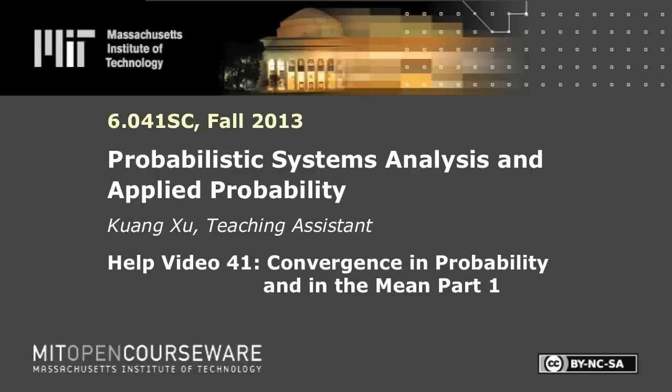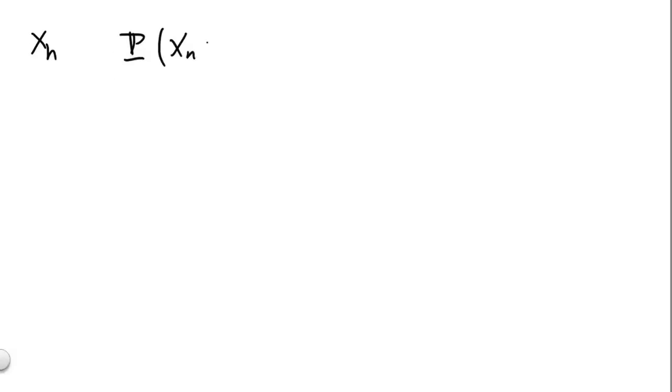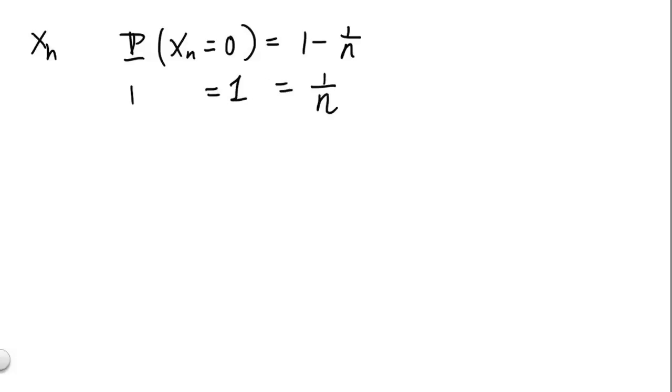In this exercise, we'll be working with the notion of convergence in probability, as well as some other notions of convergence of random variables that we'll introduce later. The first type of random variable is xn, where xn has probability 1 minus 1 over n to be at 0, and probability 1 over n to be at 1.